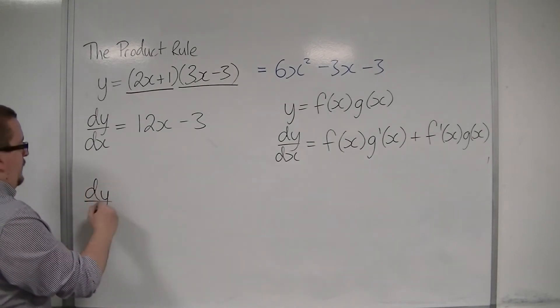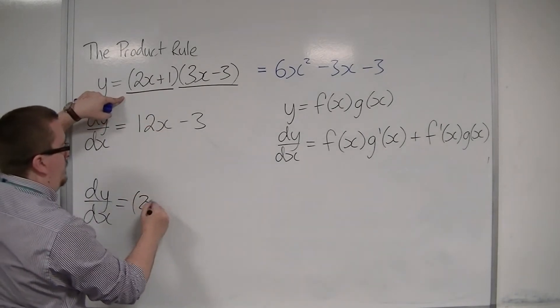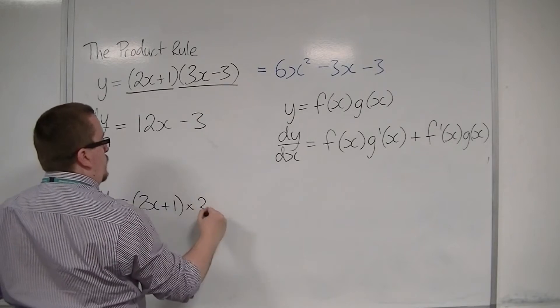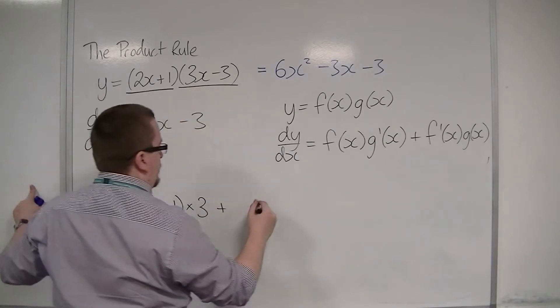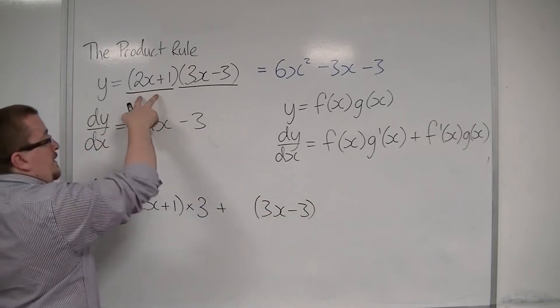then dy by dx is the first, so 2x plus 1, times the derivative of the second, which will be 3, plus the second, times the derivative of the first, which will be 2.